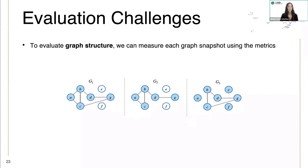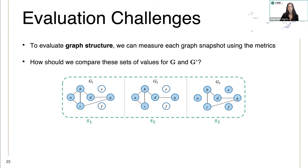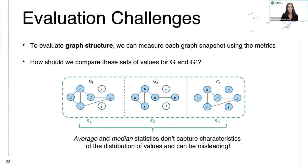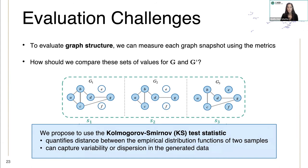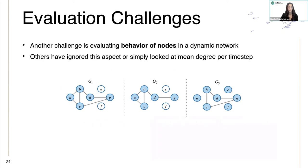To evaluate graph structure, we can measure each graph snapshot using the metrics. But how do we compare these sets of values for both graphs? Taking the average and median statistics can be misleading. So we propose to use the KS test statistics.